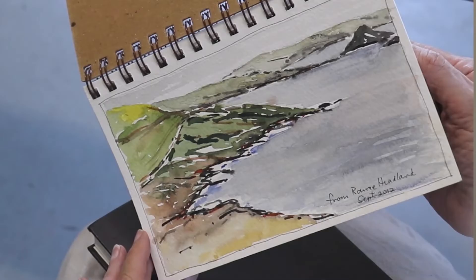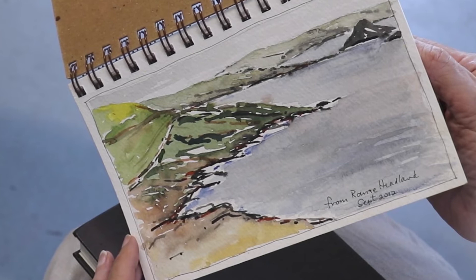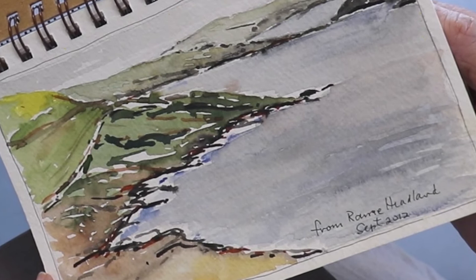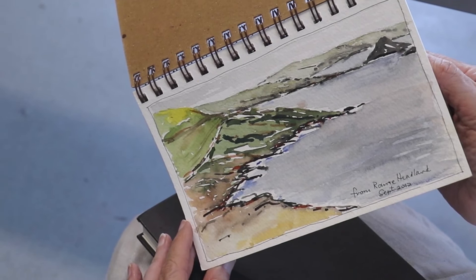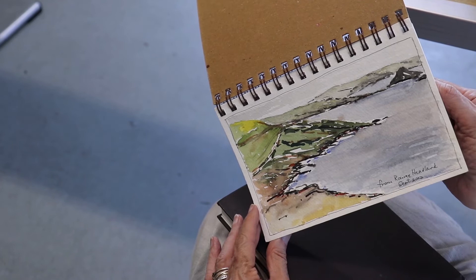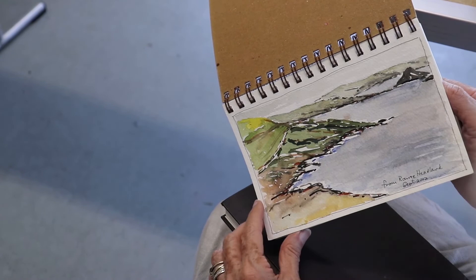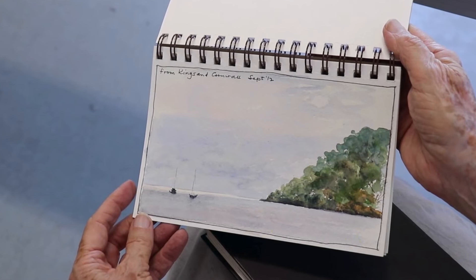Another book that I've got, this was in 2012, September 2012, when we went to Cornwall. And this is on a walk up the coastline in Cornwall. Again, at this stage, I don't often draw in ink at all. I just paint straight away and get an impression of the scenery. And I always put a date on it so that it helps me to remember when and where it was. That was in September 2012.